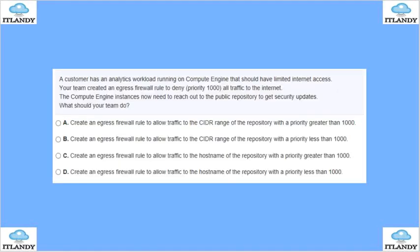A customer has an analytics workload running on Compute Engine that should have limited internet access. Your team created an egress firewall rule to deny traffic at priority 1000 to the internet. The Compute Engine instances now need to reach out to a public repo to get security updates. What should the team do? Create an egress firewall rule to allow traffic to the CIDR or hostname of the repo. Rather than allowing a CIDR range, just allow the hostname so it can handle DNS resolving at a priority greater than 1000. The answer is C.